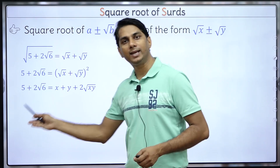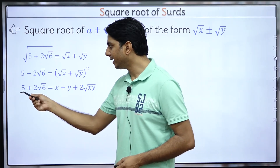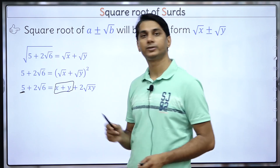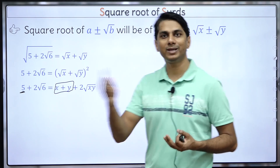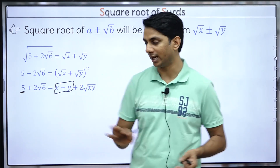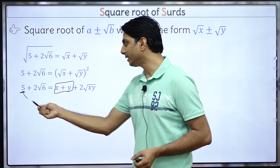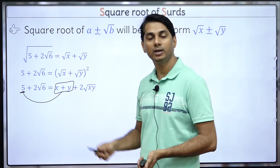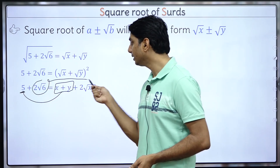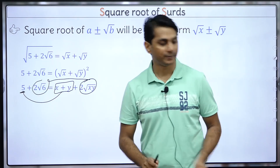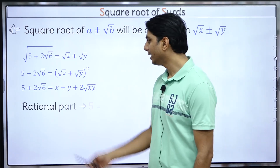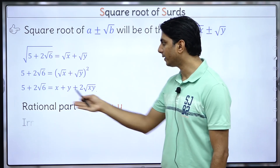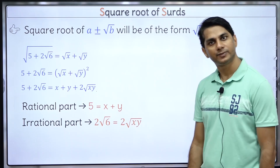Now comparing left hand side and right hand side: on the left side the rational term is 5, and on the right side x + y are the rational terms combined. Since a rational number cannot be irrational and an irrational cannot be rational, we can compare rational parts and irrational parts separately. So x + y = 5, and 2√(xy) = 2√6.